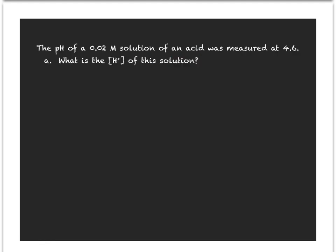Now we have a solution of an acid and we're given the pH. The question is, what's the hydrogen ion concentration of the solution? We know that the pH is equal to the negative log of the concentration of the hydrogen ions. But we're trying to find this number, so we have to remember a couple of our log rules.